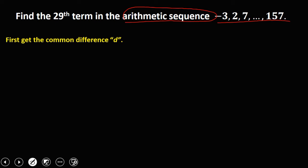The common difference is the difference between two consecutive terms—the difference between negative 3 and 2, or positive 2 and positive 7.